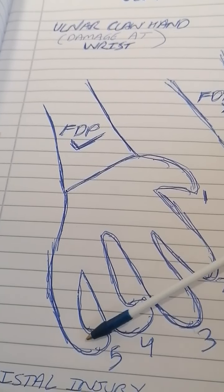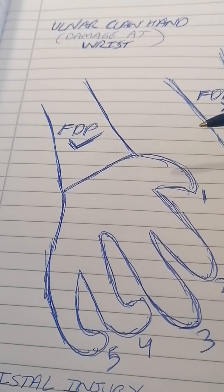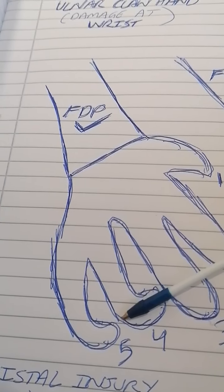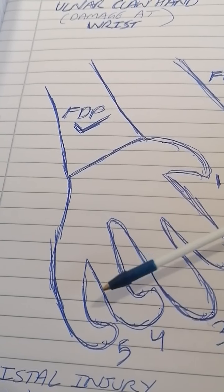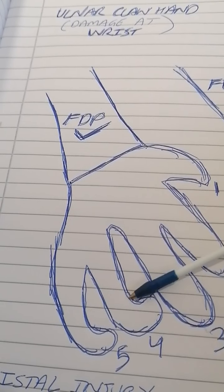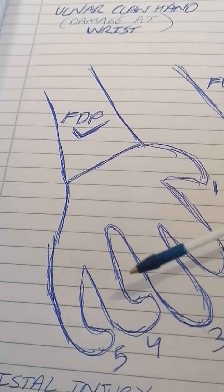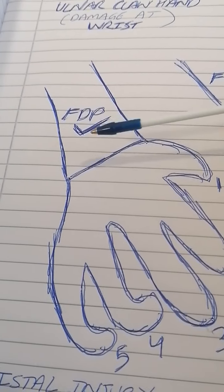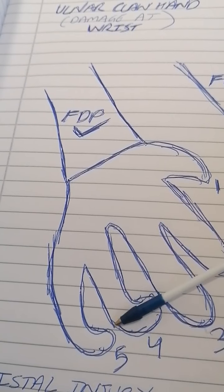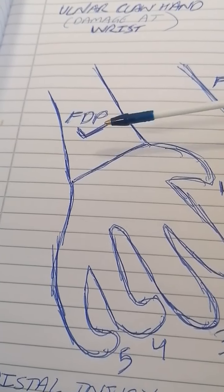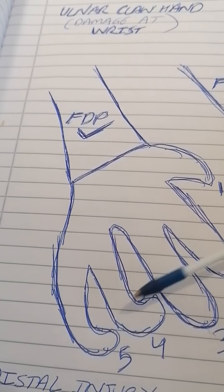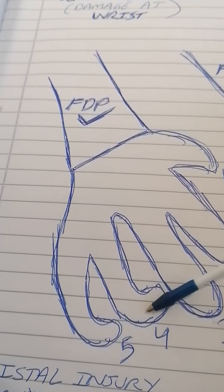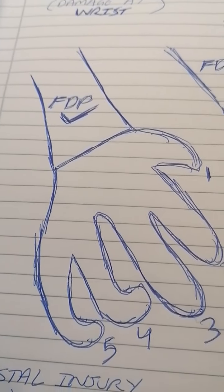Remember: we call them the third and fourth FDP, not fourth and fifth, because the thumb has neither FDP nor FDS. The role of FDP tendons, which reach the distal interphalangeal joints, is to flex those distal joints — not to be confused with FDS, which acts at the proximal interphalangeal joints.